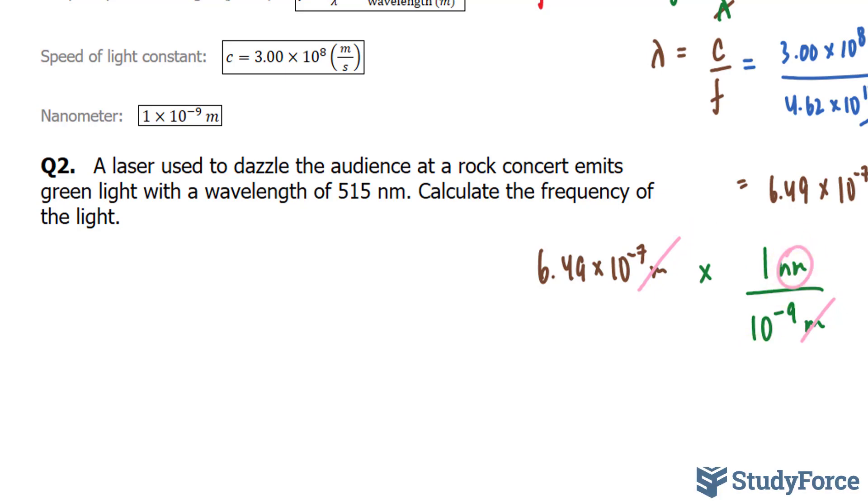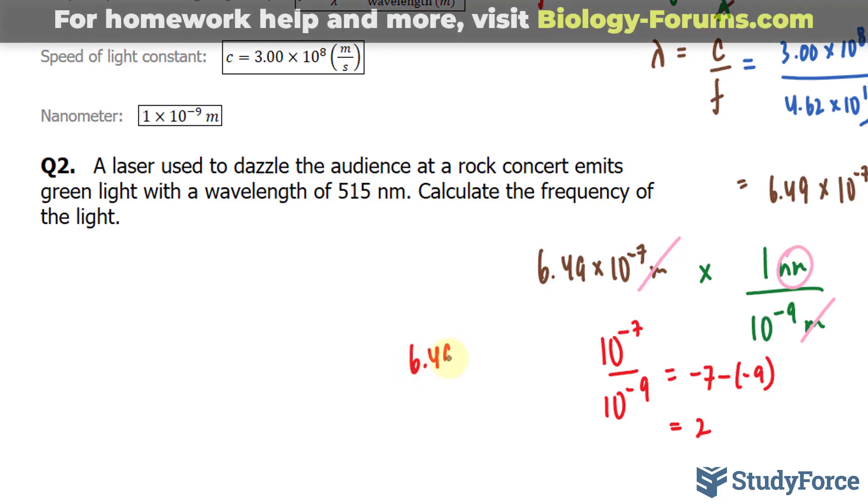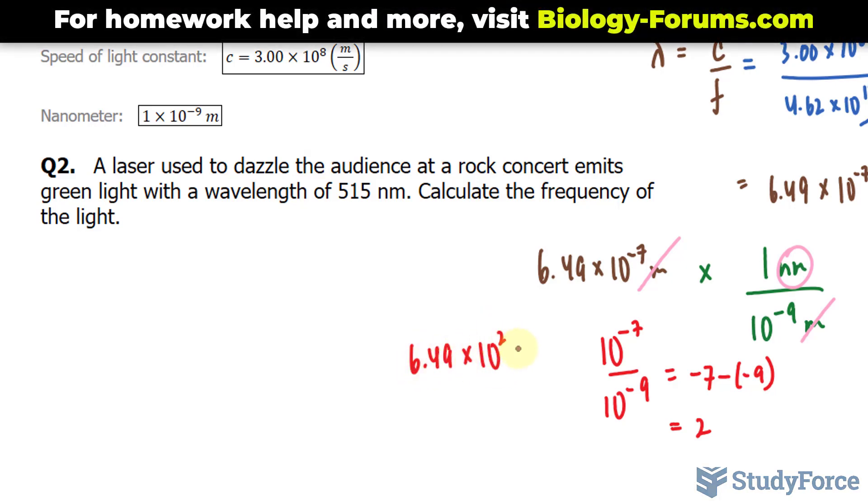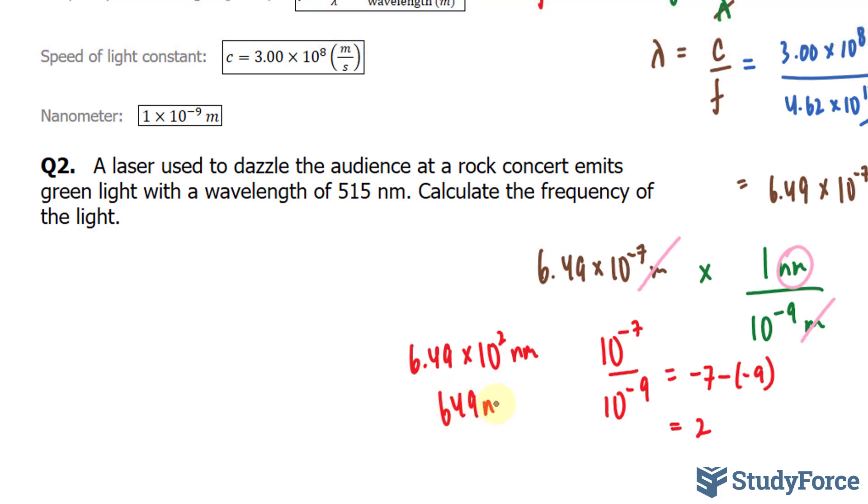Now using the laws of exponents, we can cheat a little bit here. We have 10 to the power of negative 7 over 10 to the power of negative 9. Negative 7 minus negative 9 is equal to negative 7 plus 9, which is 2. So we have 6.49 times 10 to the power of 2 nanometers, or simply 649 nanometers.